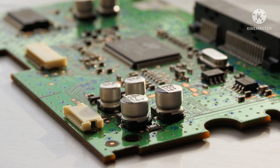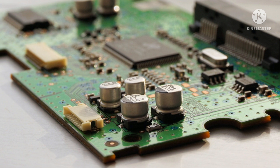A PCB stack-up is how you arrange various layers within a PCB and what kind of material you choose for your PCB design. Let us consider an example PCB stack-up for a four-layer PCB board, in which we can see there is a copper foil, prepeg, copper clad laminate, prepeg, and copper foil.